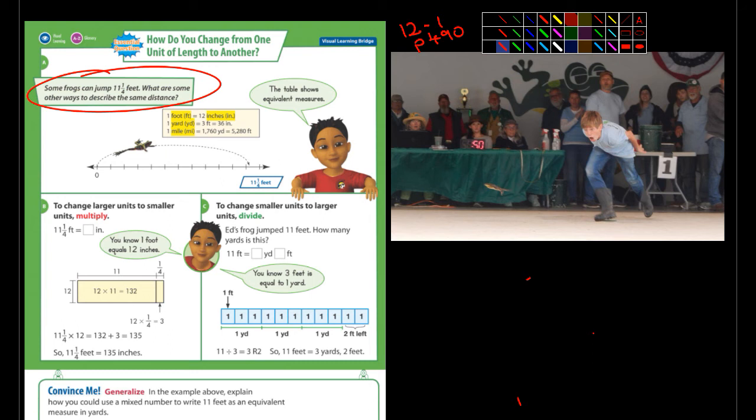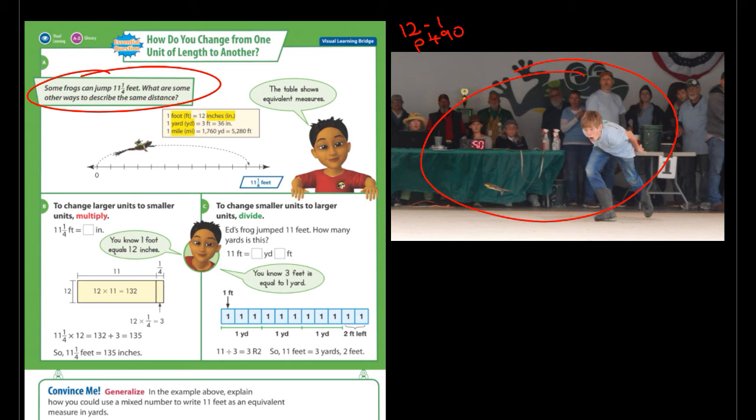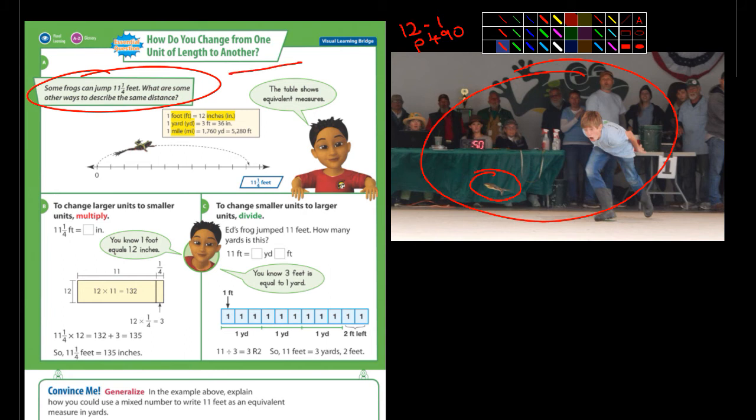What are some of the other ways to describe that same distance? So I grabbed a picture here as you can see on the right of the frog jump from last year. Do you guys see the frog in there? It took me a moment to see it. But this young man, you can see his frog right there. His frog jumped over 18 feet. So I was looking at what they had written in our workbook and I was thinking, wait, I think the Calaveras frog jump has frogs that jump a whole lot further than that. Anyways, here it says 1 foot equals 12 inches, 1 yard is 3 feet, 1 mile is 5,280 feet, but it's also 1,760 yards. That might be some information that will come into play as we go through this chapter.